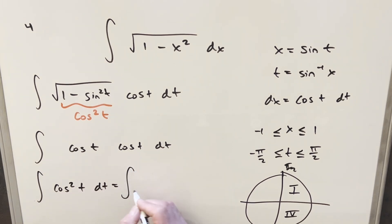But I can use the power reduction on this and write it as 1 half plus 1 half cosine of 2t dt.